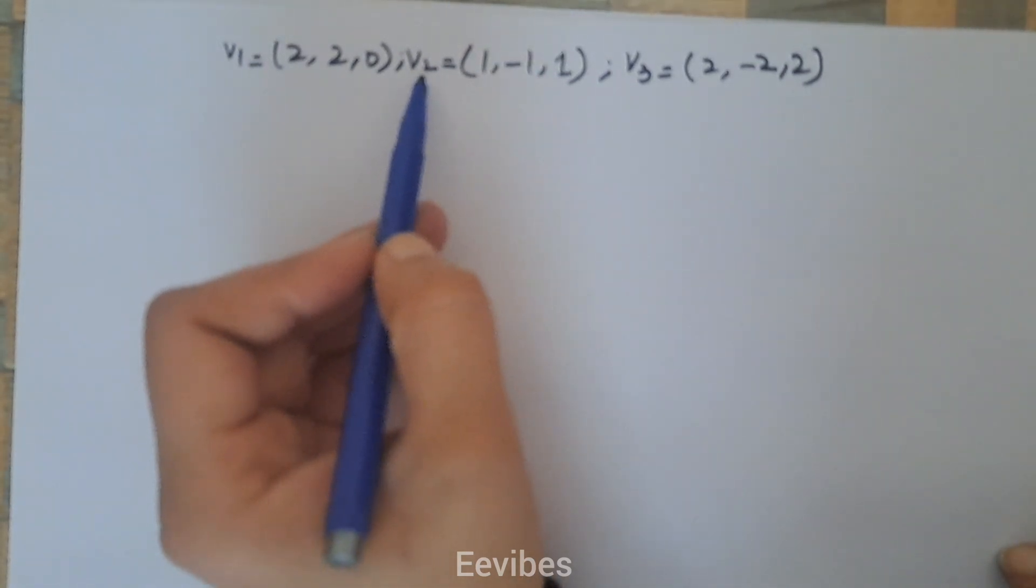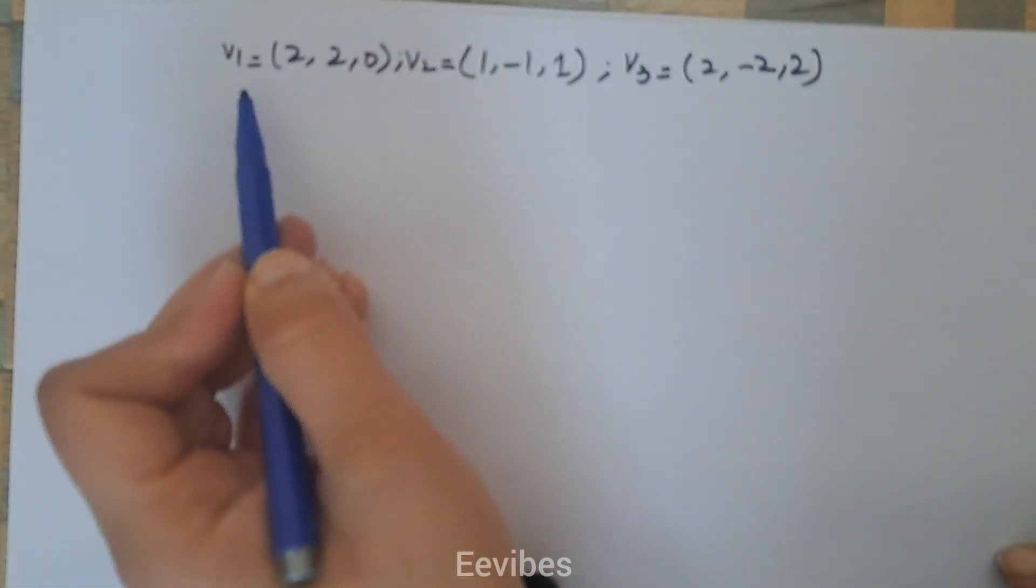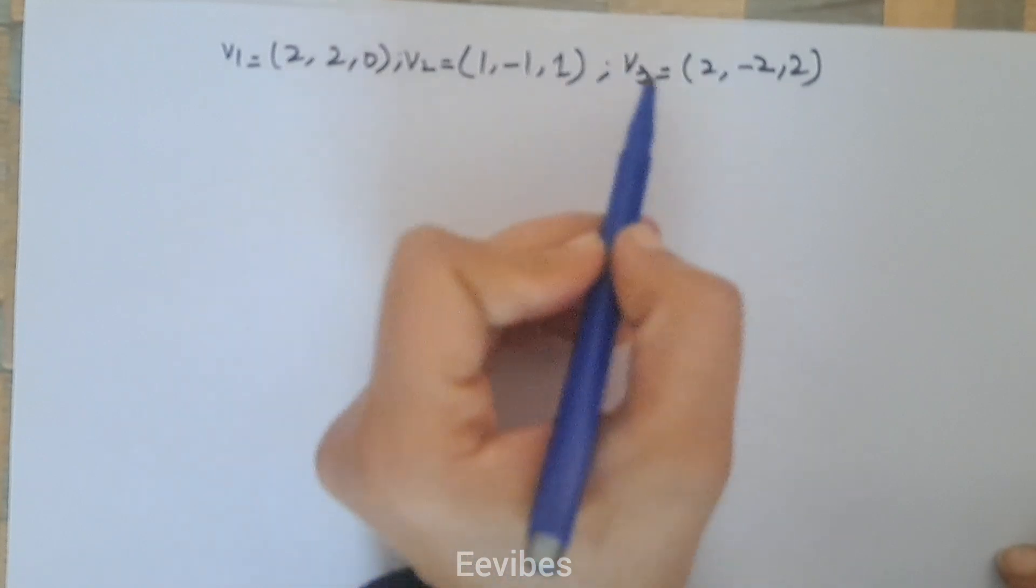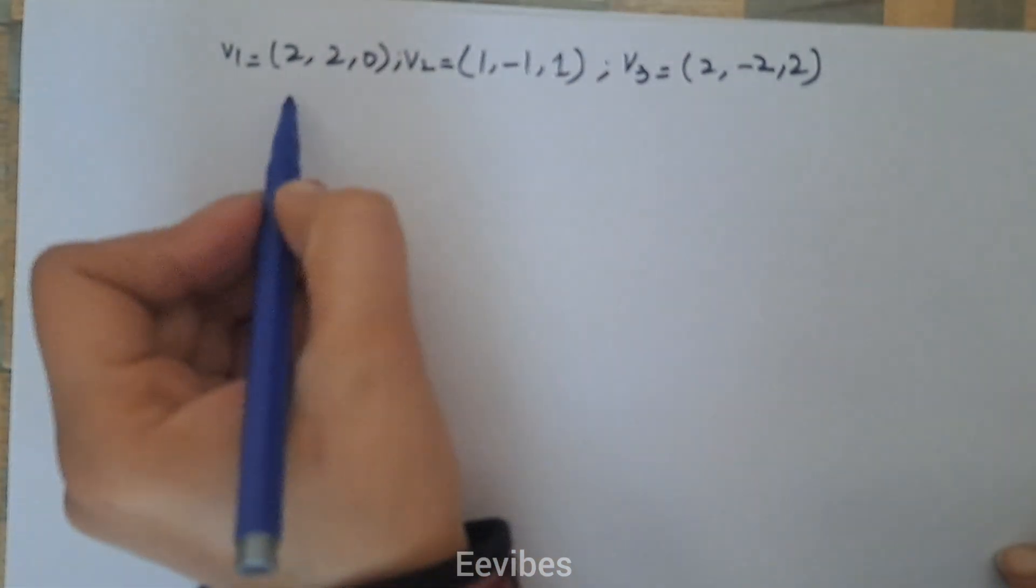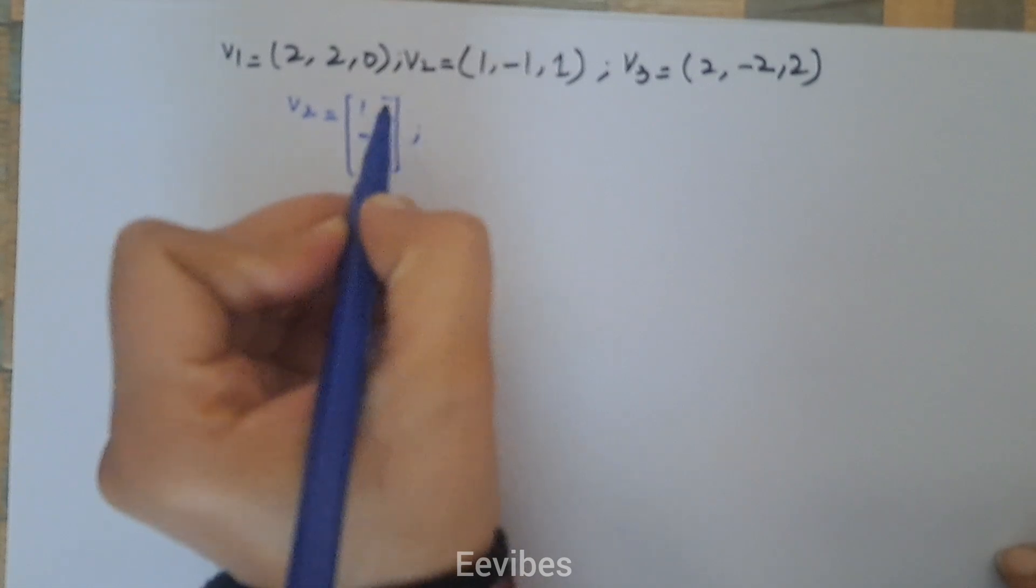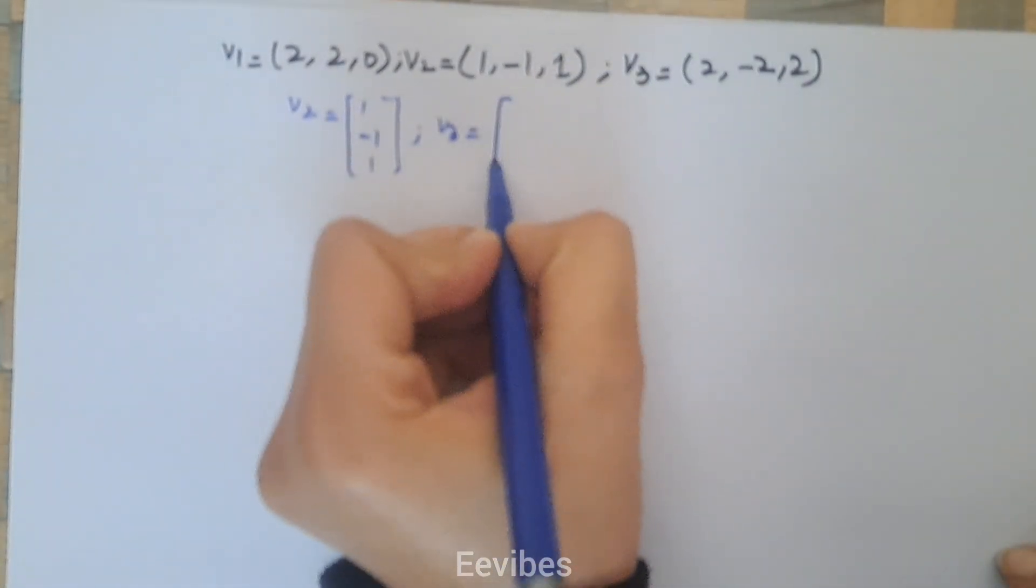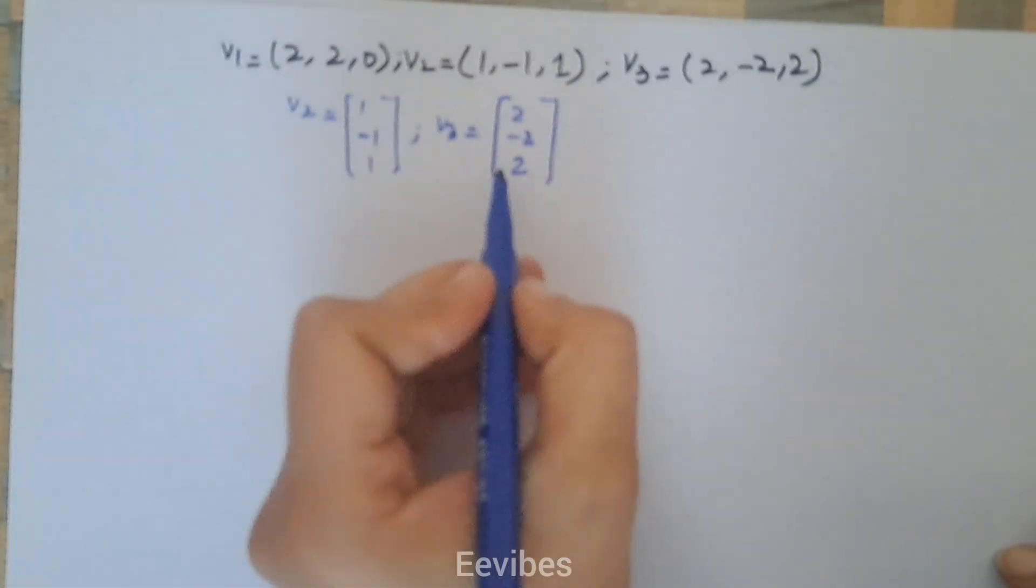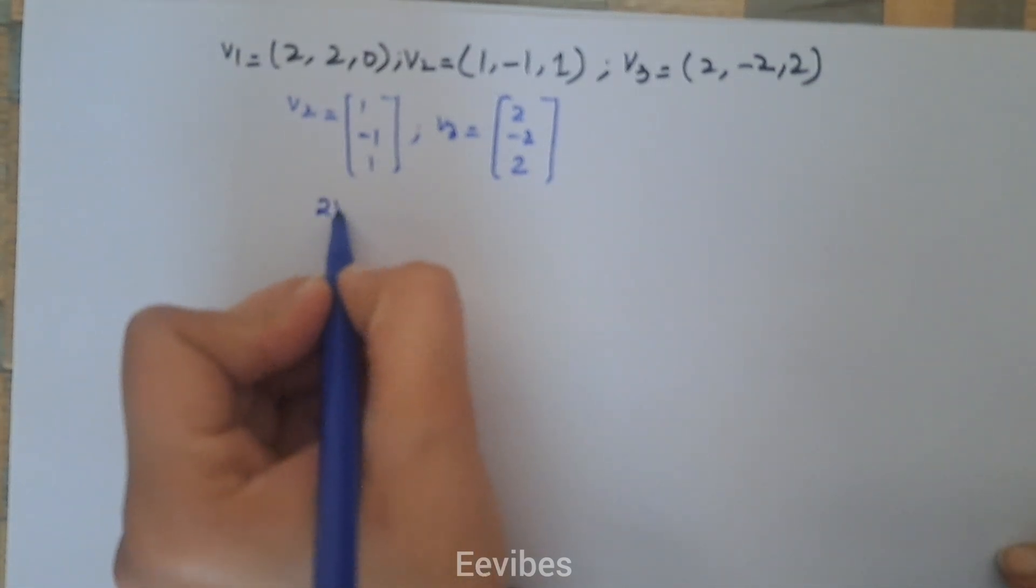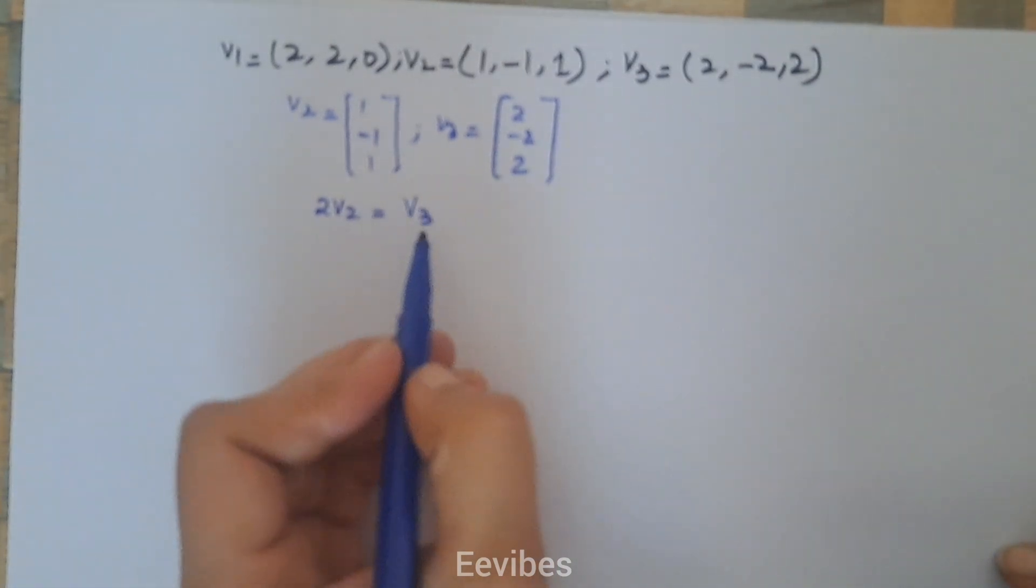But looking at the values of V2, we can see that a certain relation exists. V2 is equal to (1, -1, 1) while V3 is equal to (2, -2, 2). From here we can see that if we scale vector V2 by 2, then 2 times V2 will equal V3.